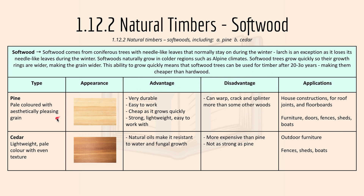Pine is pale-colored with an aesthetically pleasing grain. The advantage is it's very durable, easy to work with, and cheap as it grows quickly. The disadvantage is it can warp, crack, or splinter more than some other woods. Applications include house construction for roof joints and floorboards, as well as furniture, doors, and fences.